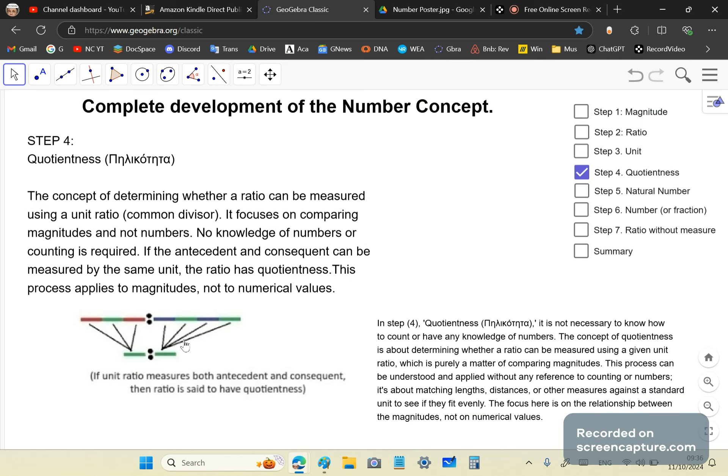And if that happens, then the ratio has quotientness. This process only applies to magnitudes, not to numerical values, because later when we have number, we talk about the common divisor that can be counted. These first four steps, as you can see here, are part of geometry. There's no number involved in this concept of number, in the development of the number concept until this stage. Step one through step four doesn't involve numbers. It's only geometry using line segments or ratios of distances. In other words, the magnitudes we're using are distances.